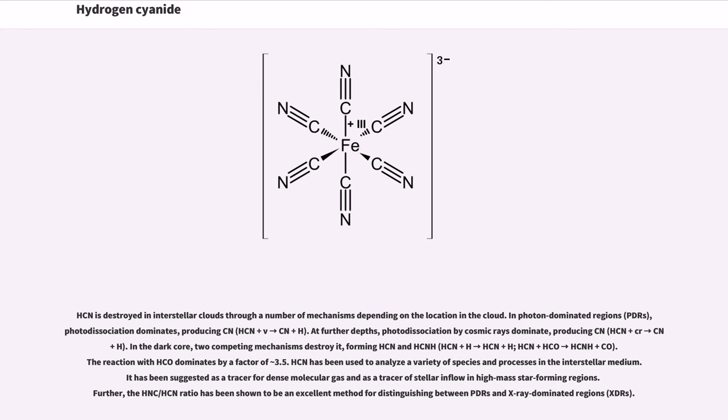HCN is destroyed in interstellar clouds through a number of mechanisms depending on the location in the cloud. In photon-dominated regions, photodissociation dominates, producing CN. At further depths, photodissociation by cosmic rays dominates, producing CN. In the dark core, two competing mechanisms destroy it, forming HCN+ and HCNH+. The reaction with HCO+ dominates by a factor of 3.5.